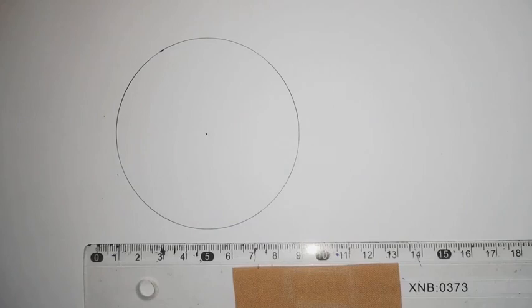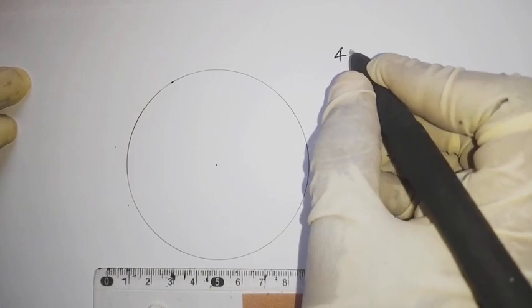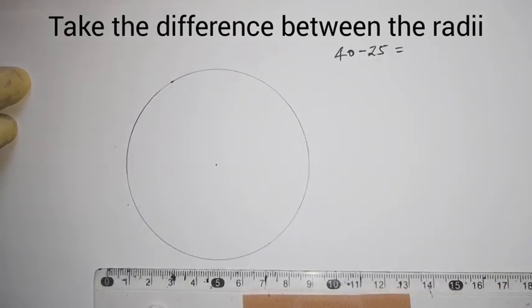The second thing: we take the difference between the radii, so that is 40 minus 25. What is 40 minus 25? 15.